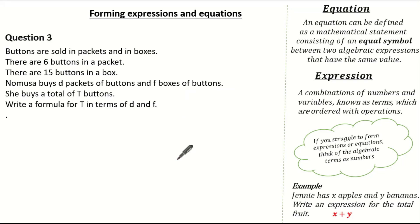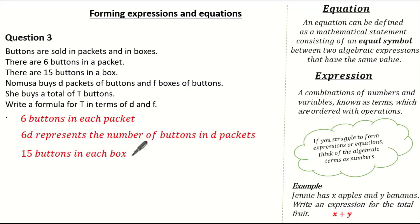So we know there are 6 buttons in each packet. And given Numusa buys D packets, this means 6D represents the number of buttons in D packets. We also know there are 15 buttons in each box. Now Numusa buys F boxes. So that means 15F represents the number of buttons in F boxes. So the formula for T, T being the total buttons, is simply T is equal to 6D plus 15F.